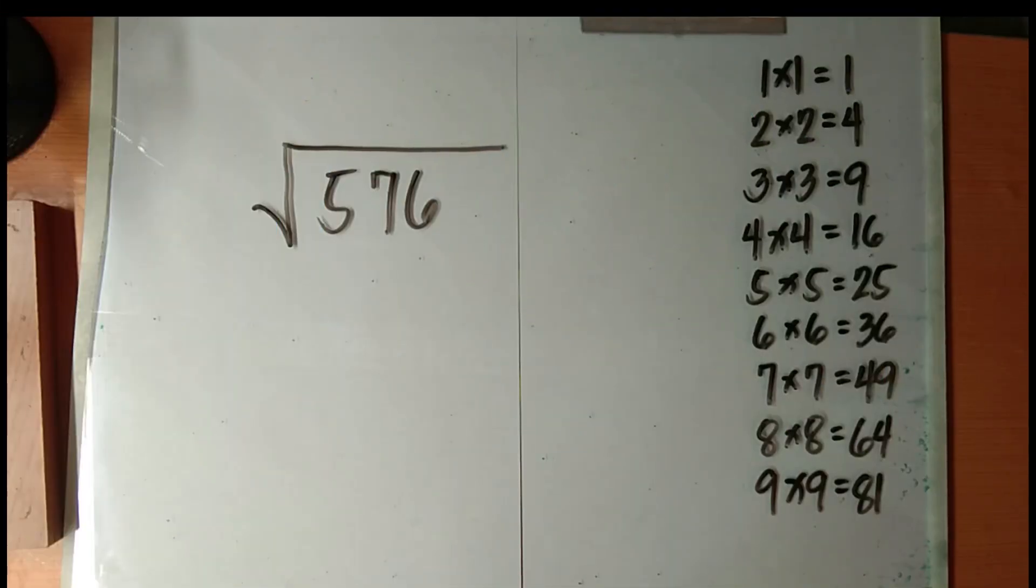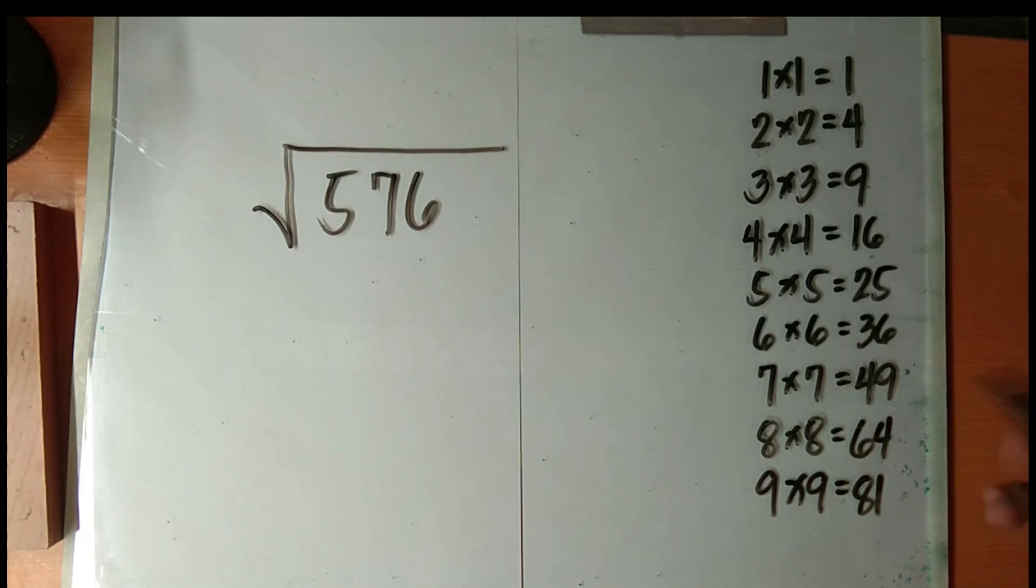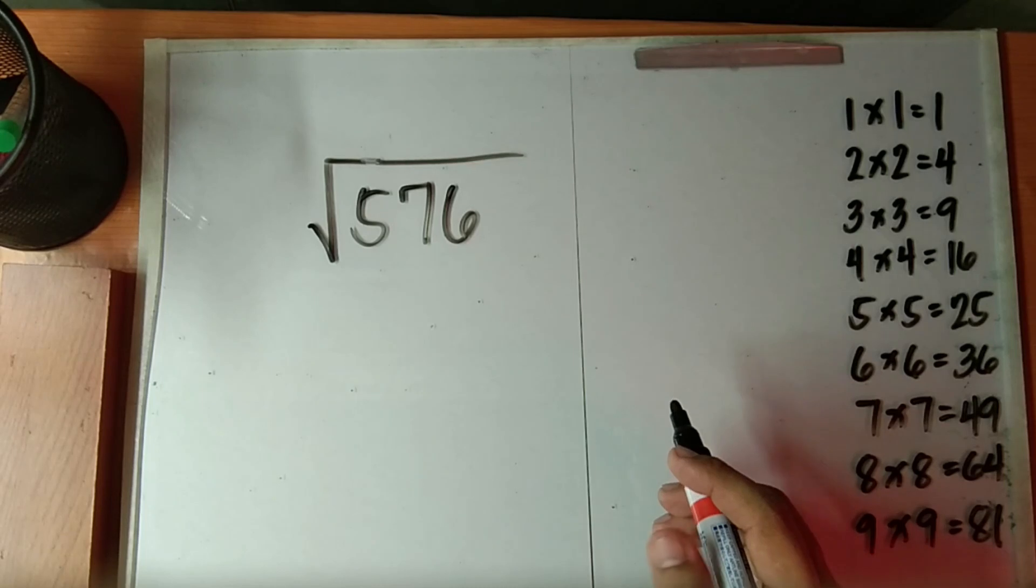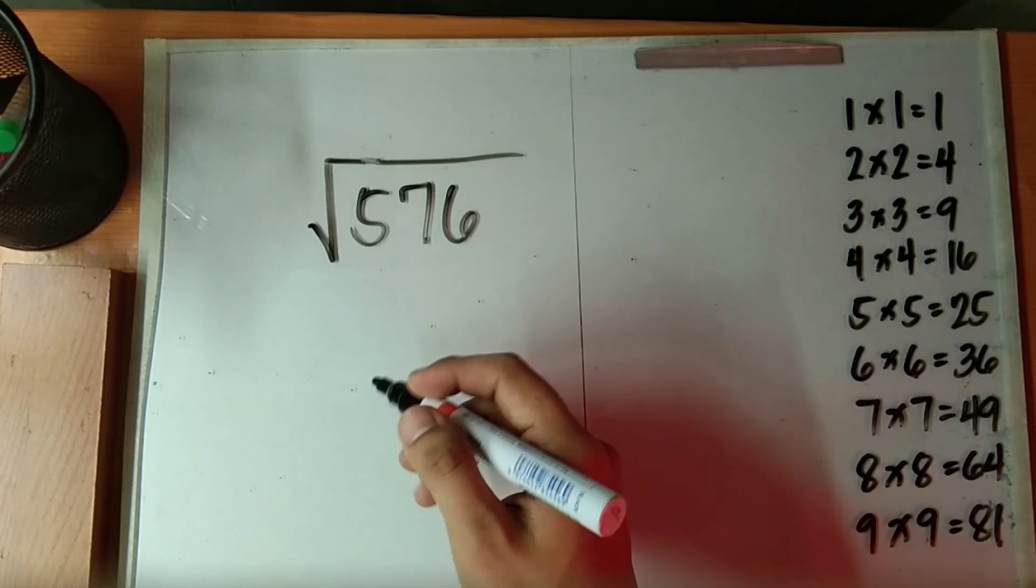For the computation of square root, you should at least know the squares of the digits 1 to 9 for it will be a great help later in our computation. Now let's start. For our example, find the square root of 576.